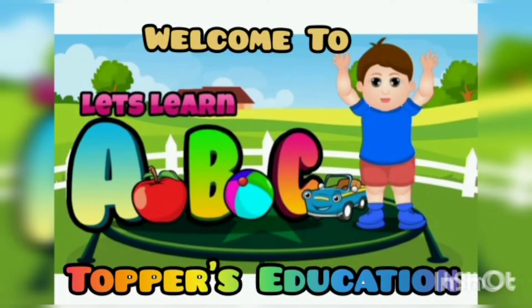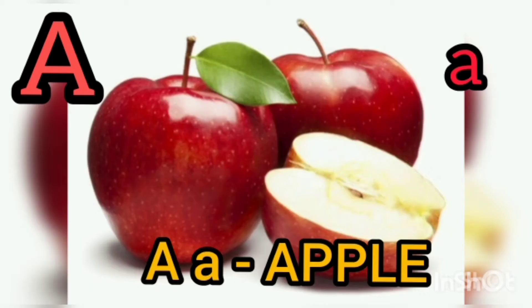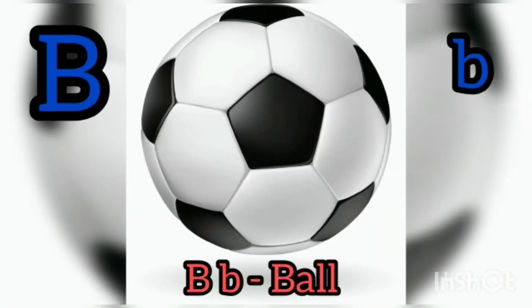Hello, let's learn the Alphabet. A for Apple, Apple means save. B for Ball, Ball means game.